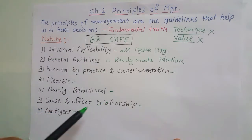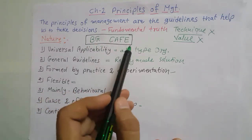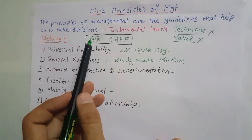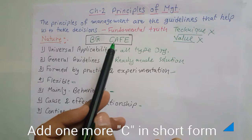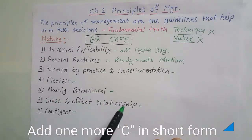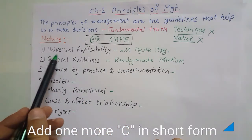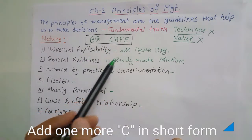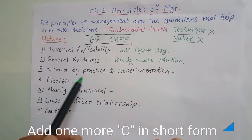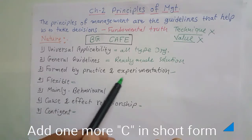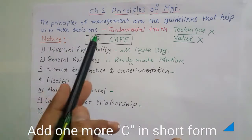So we have covered all the points of the nature of principles of management. You can easily remember these with the help of the word BG Cafe: B means mainly Behavioral, G means General guidelines, C means Cause and effect relationship, A means universal Applicability, F means Flexible, and E means formed by practice and Experimentation. So with the help of the word BG Cafe, you can easily remember all the natures of principles of management.